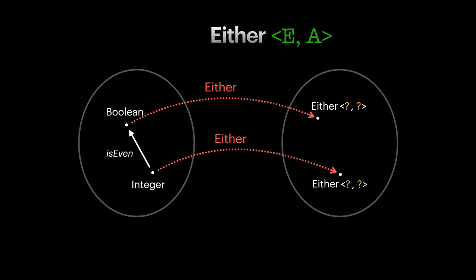Let's say we fix the left type parameter of either to a string. Now we can map the objects. Integer would be mapped to either of a string and integer, and boolean maps to either of a string and boolean.